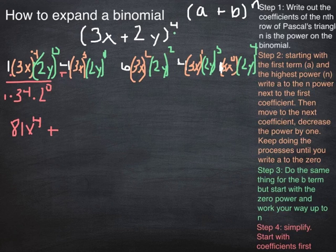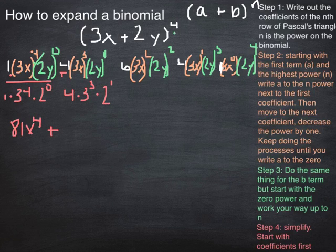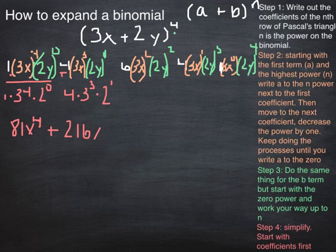And we're going to go plus. Here we have 4 times 3 to the 3rd times 2 to the 1st. So that would be 4 times 27 times 2. So that's 108 times 2, so that would be 216. I have x cubed, y to the 1st.